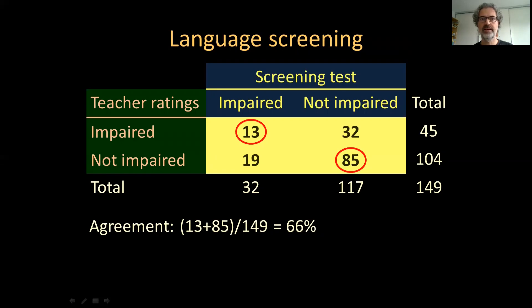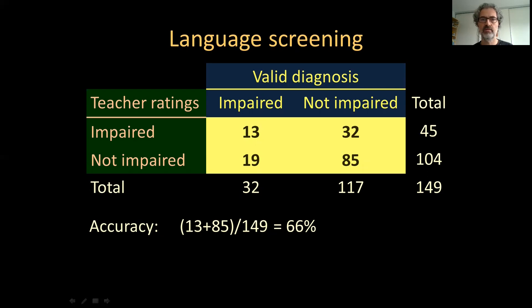Instead, one of the two variables can be treated as the valid diagnosis, treated as the truth. So a reference variable is what is considered correct, and there we are essentially judging or evaluating the adequacy of the other instrument.